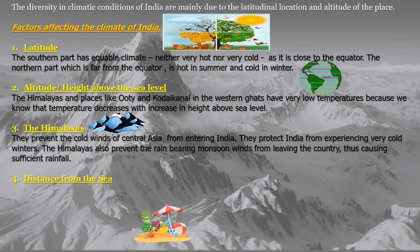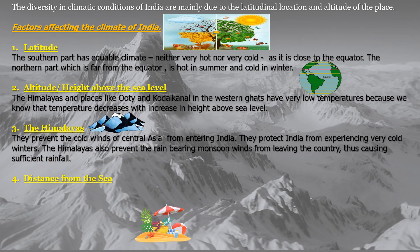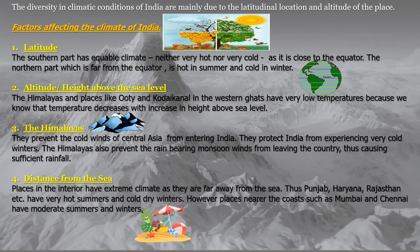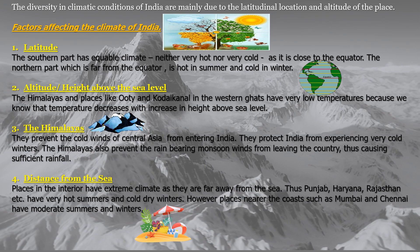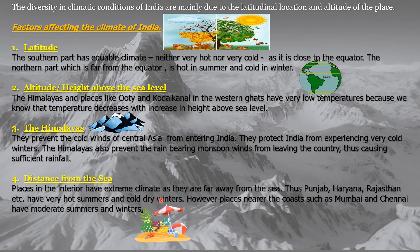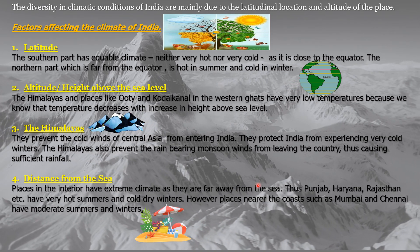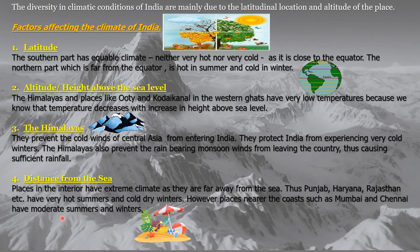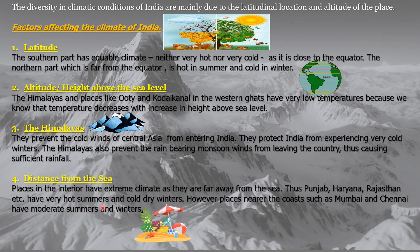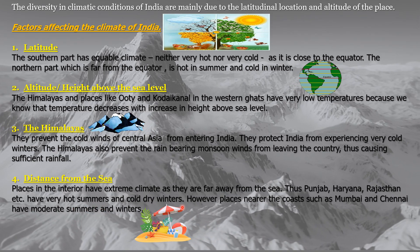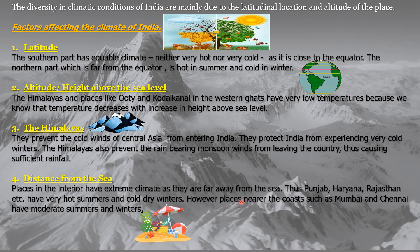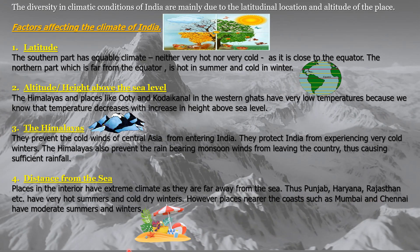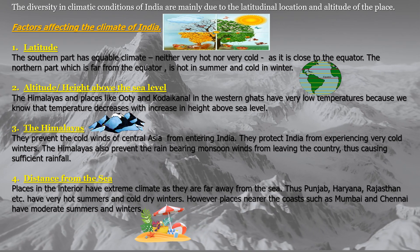The fourth factor which affects the climate of India is distance from the sea. Places in the interior have extreme climate as they are far away from the sea. Thus Punjab, Haryana, and Rajasthan have very hot summers and cold dry winters. However, places nearer the coast such as Mumbai and Chennai have moderate summers and winters.